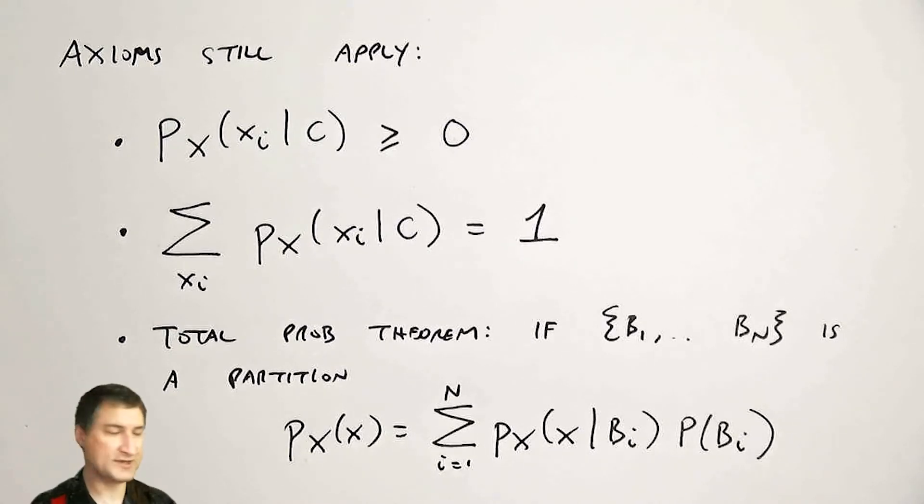So these three things together basically are most of what you need to know about conditional probability. And so we're going to do some more examples in a second, and we're going to talk about the concept of conditional expected value.